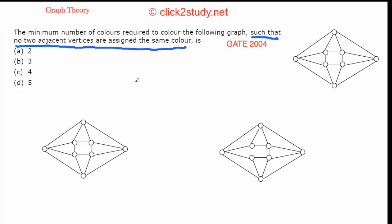This is the graph given to us. The first thing to notice about this graph is that it is a planar graph — you can clearly see that. And if you remember the four color theorem: the four color theorem says that any planar graph can be colored with only four colors. So that kind of eliminates the option requiring more than four colors.